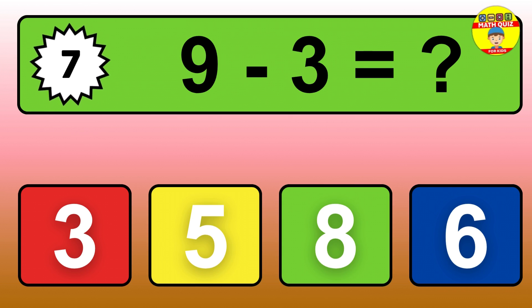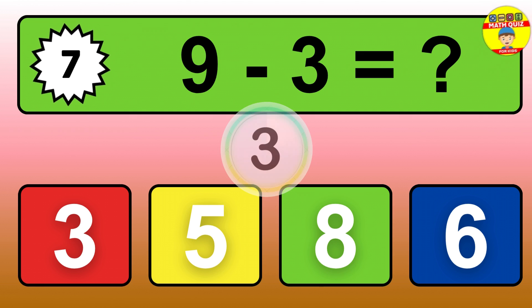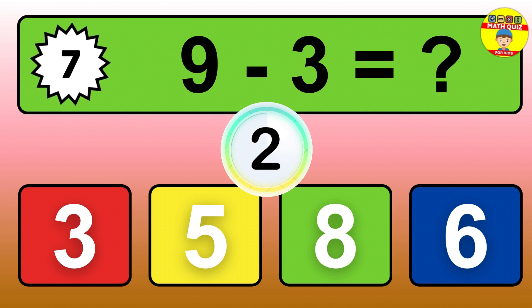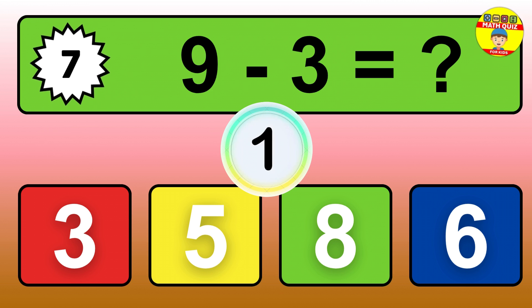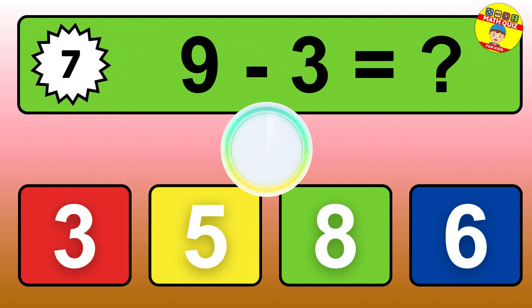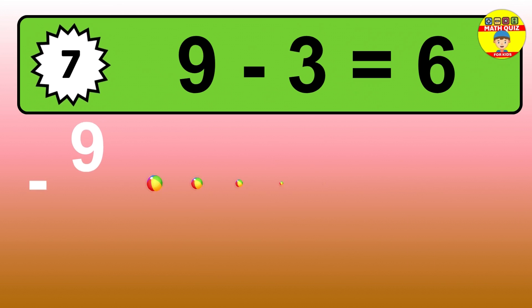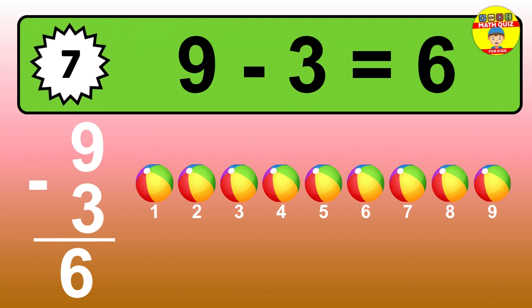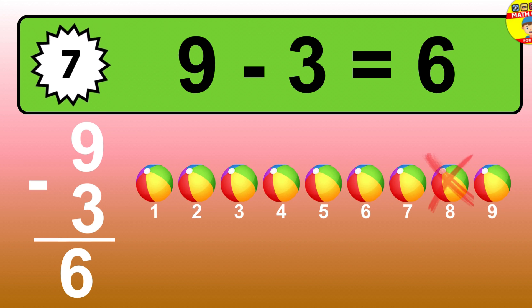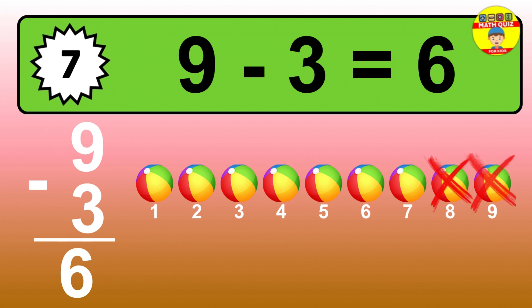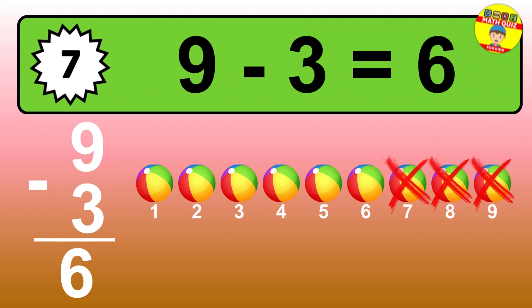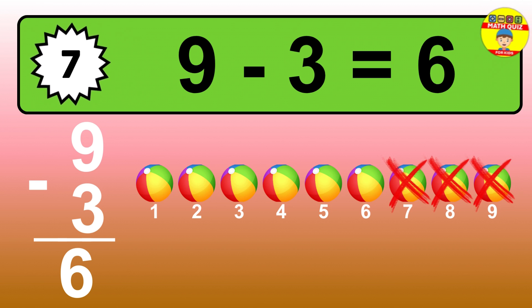Question seven: nine minus three equals what? So the answer is, nine minus three is six. Let's count it. One, two, three, four, five, six.